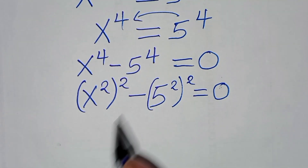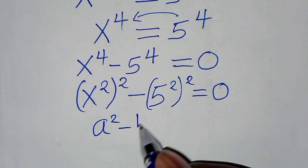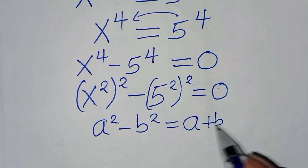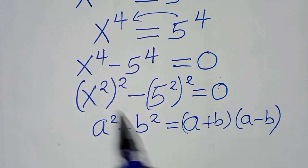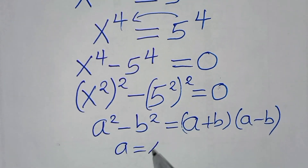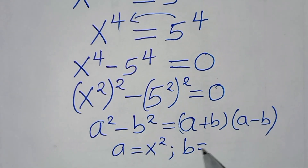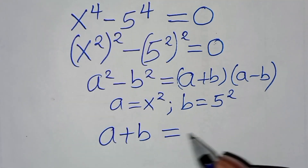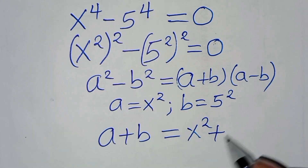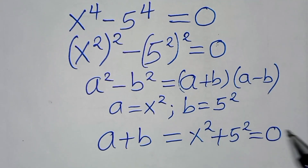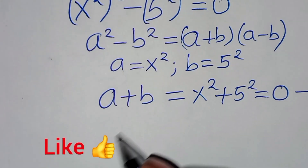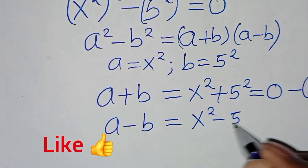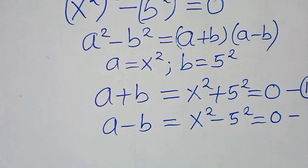This equation is in the form of a squared minus b squared, which is the difference of two squares, which we can express as a plus b times a minus b. From this equation, a is equal to x squared and b is equal to 5 squared. This implies that a plus b is x squared plus 5 squared equal to 0 — call this equation 1. And a minus b is x squared minus 5 squared equal to 0 — call this equation 2.